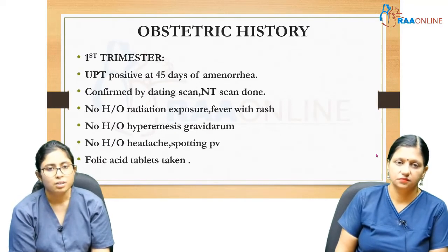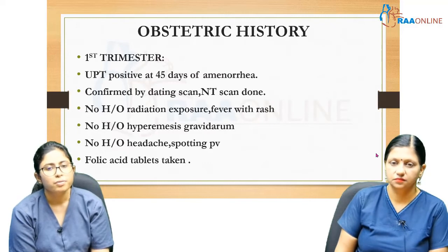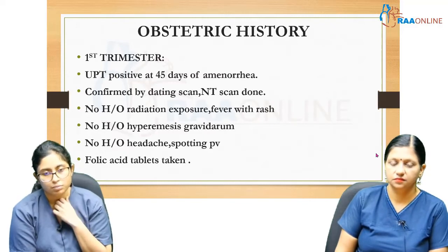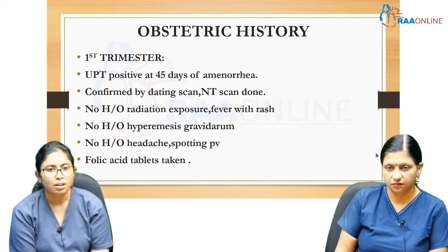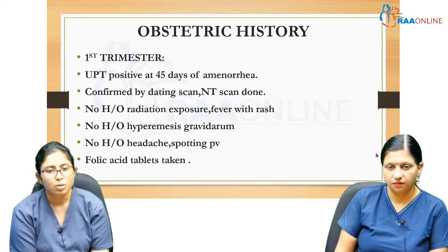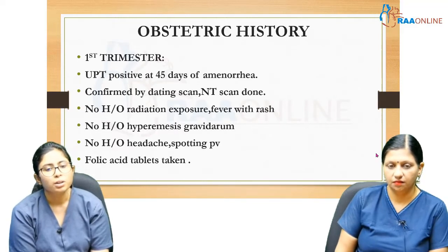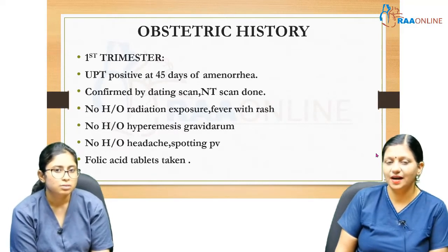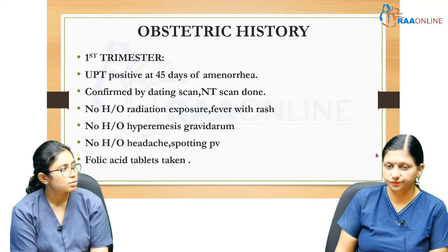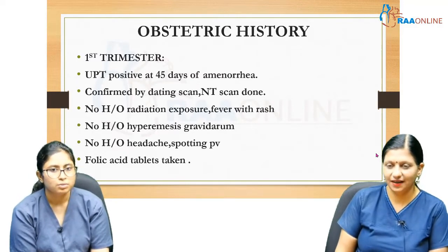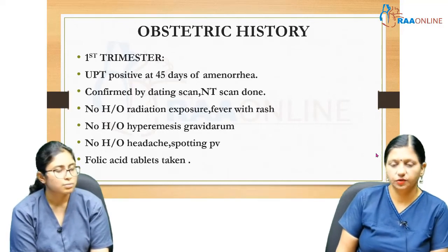Obstetric history — first trimester: pregnancy confirmed by UPT at 45 days of amenorrhea. Dating scan and NT scan done. No history of radiation exposure, fever with rash, hyperemesis gravidarum, headache, or spotting PV. Folic acid tablets taken. History of fever with rash is asked because rubella can lead to congenital anomaly. NT stands for Nuchal Translucency.